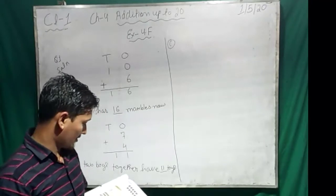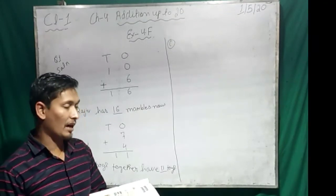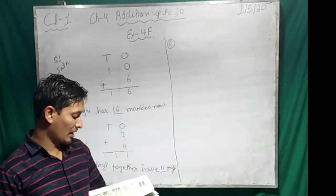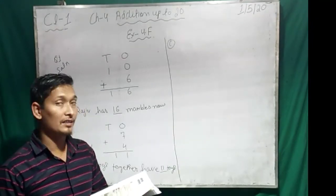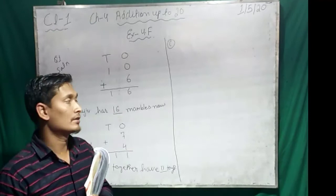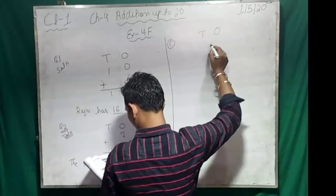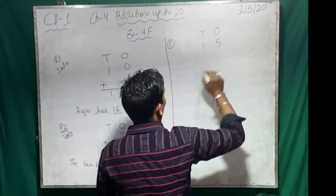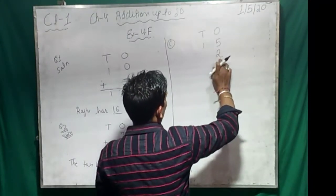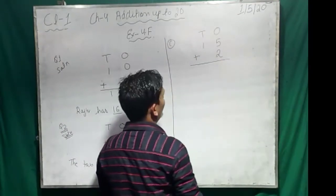Now let's do question number C also. Question number C is: there were 15 red flowers and two blue flowers in a garden. How many red? Fifteen. How many blue? Two. How many red and blue flowers are there in the garden? Now we have to find out all together. We have to count all the flowers. So first you write tens and ones. How many red? Fifteen. How many blue? Two. Don't write here. Why? Because two is at ones place, and we are doing addition from right hand side.